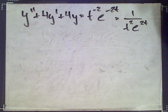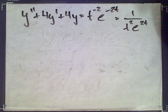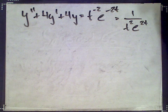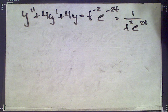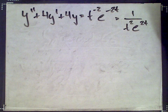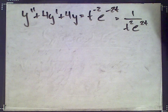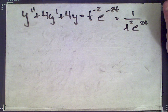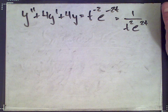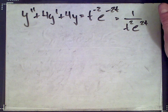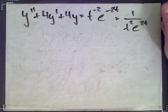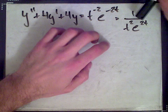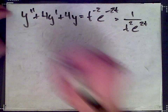That method would work for, say, a right-hand side being t squared e to the 2t. But because we have 1 over that, the method doesn't quite work, basically because you have to apply the quotient rule to the derivative. So we're going to use variation of parameters.